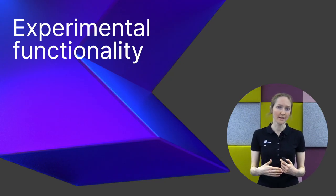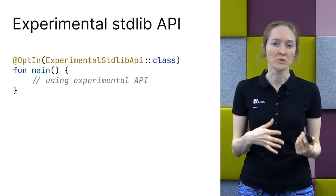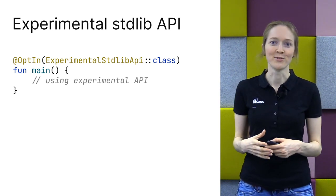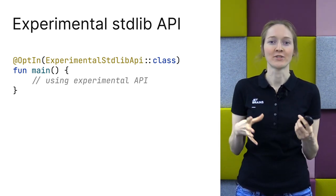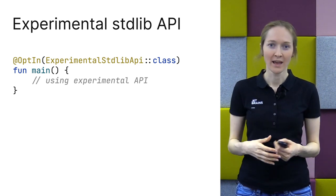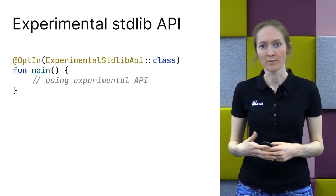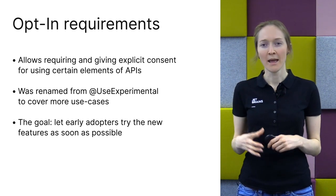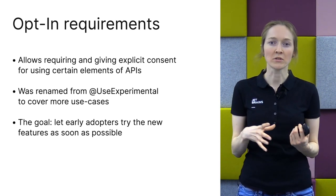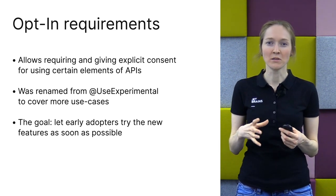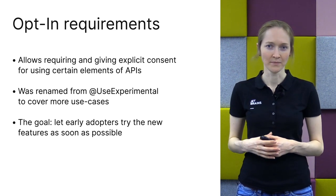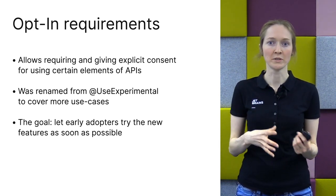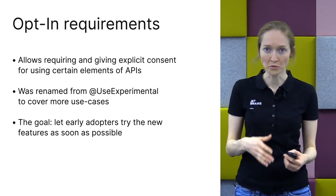Finally, I want to go over a couple of things that are currently experimental. To use the experimental standard library API, you need to explicitly opt in. Whenever you try to invoke an experimental function, you get a warning, and you need to add the opt-in annotation to suppress it. This mechanism was already present in Kotlin, but we've changed the annotation name — before it was called useExperimental, and now it's called opt-in to cover more use cases. It might also be used to annotate unstable or internal APIs, so you can use them with explicit acceptance of the risks involved. The goal of the opt-in annotation is to make users of the code explicitly agree to use certain elements of your API.